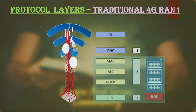Each radio access network has mandatory protocol layers. Traditional 4G network protocols are shown on the left, and the open RAN network for 5G NR is on the right. In the traditional RAN systems like 4G, a baseband unit handles all protocol layers: physical layer, MAC layer, RLC layer, PDCP layer, and RRC layer.